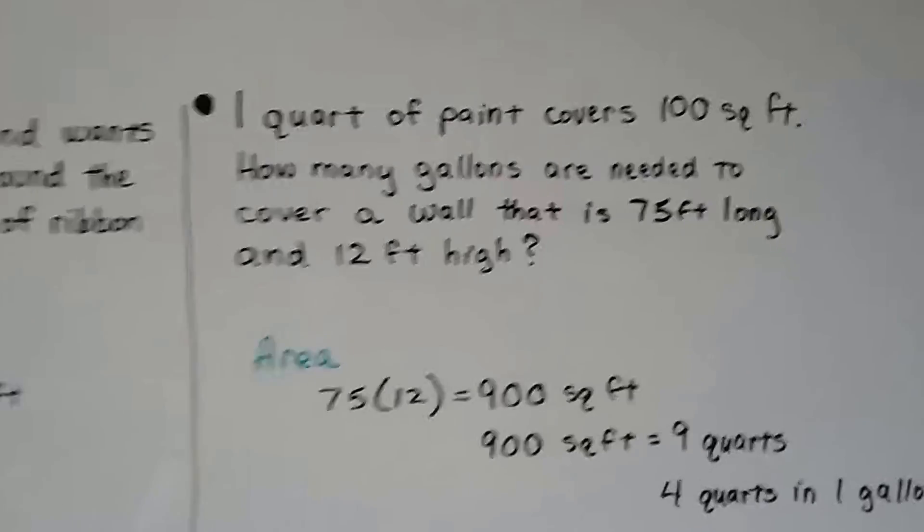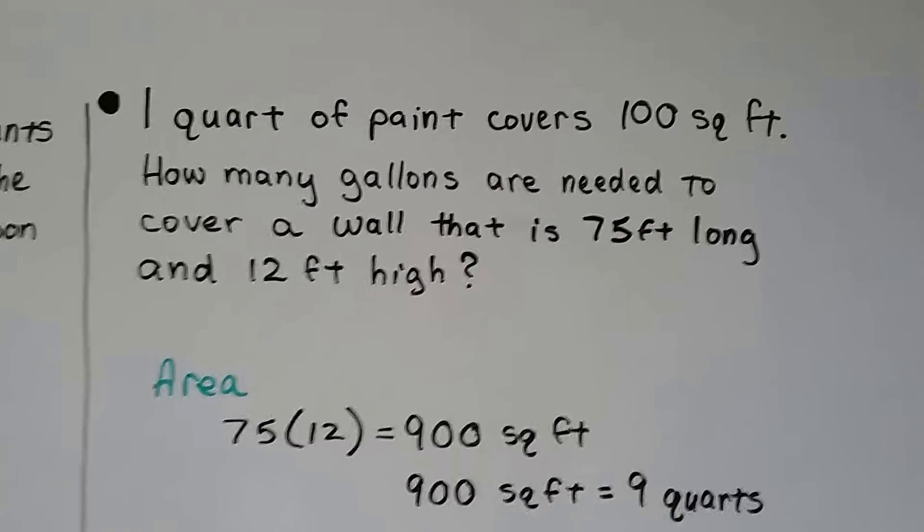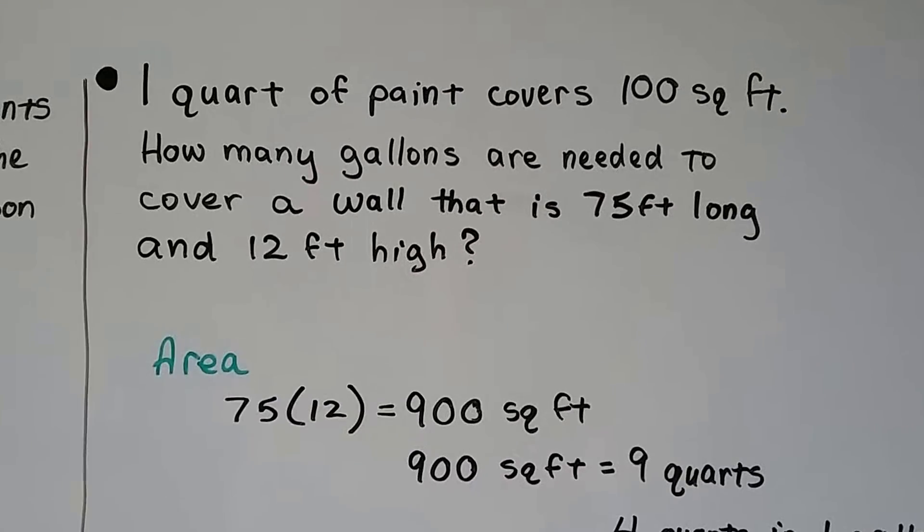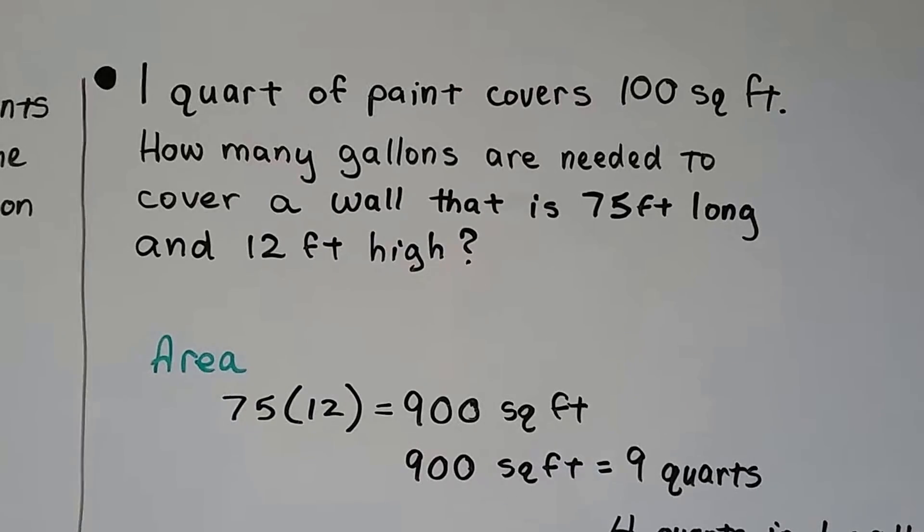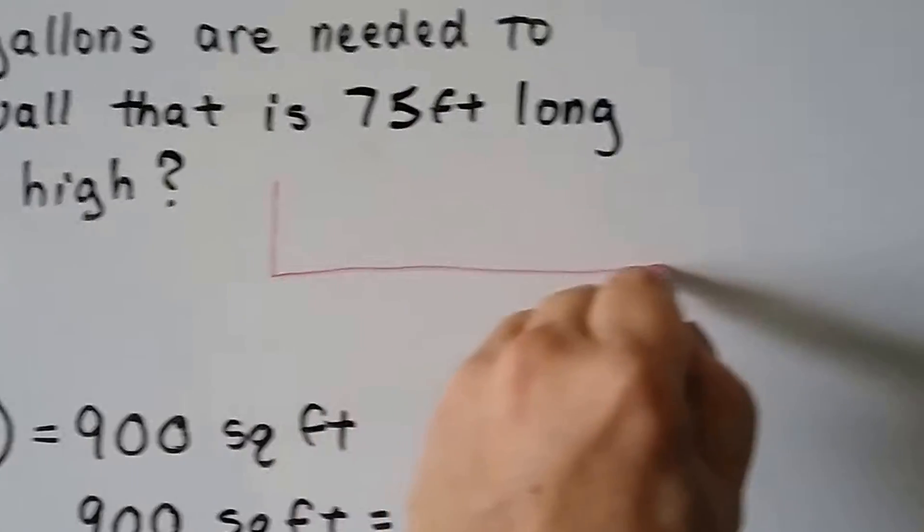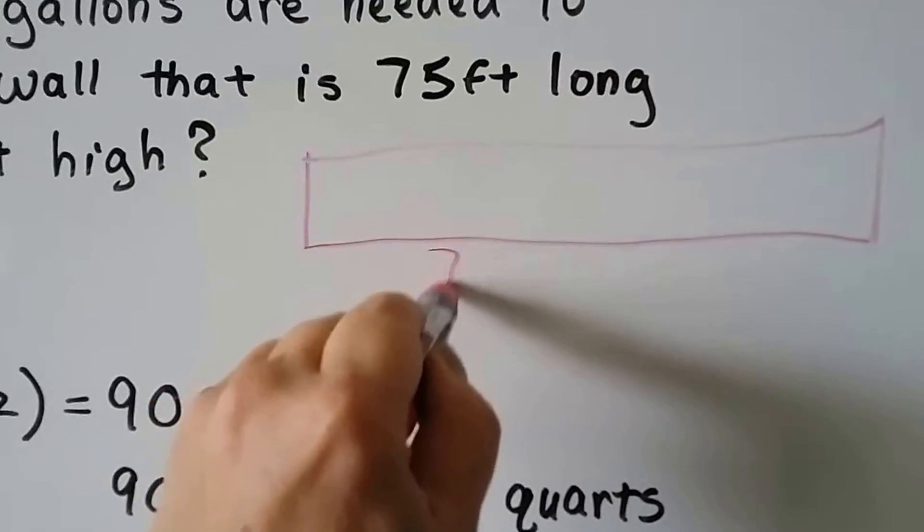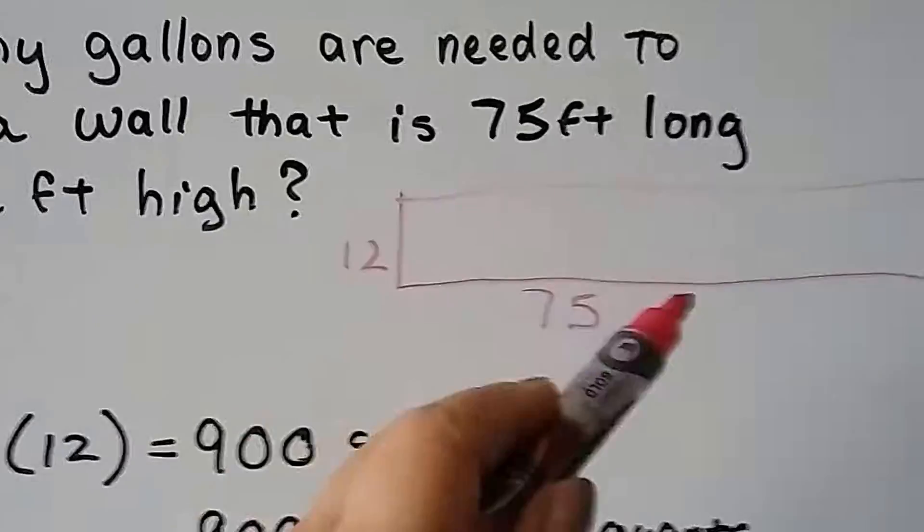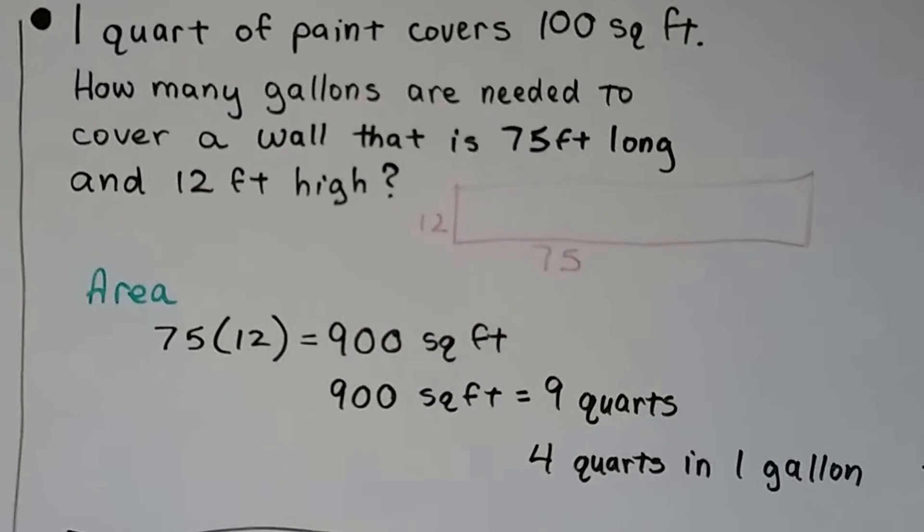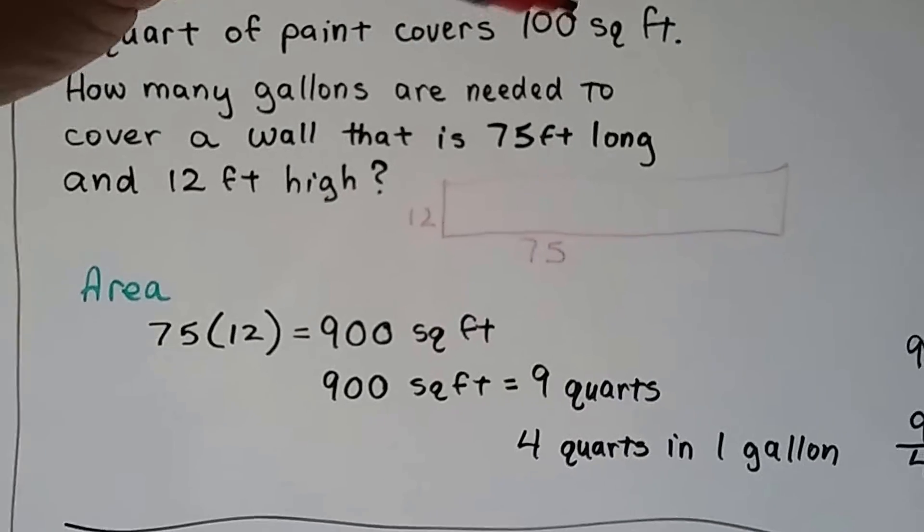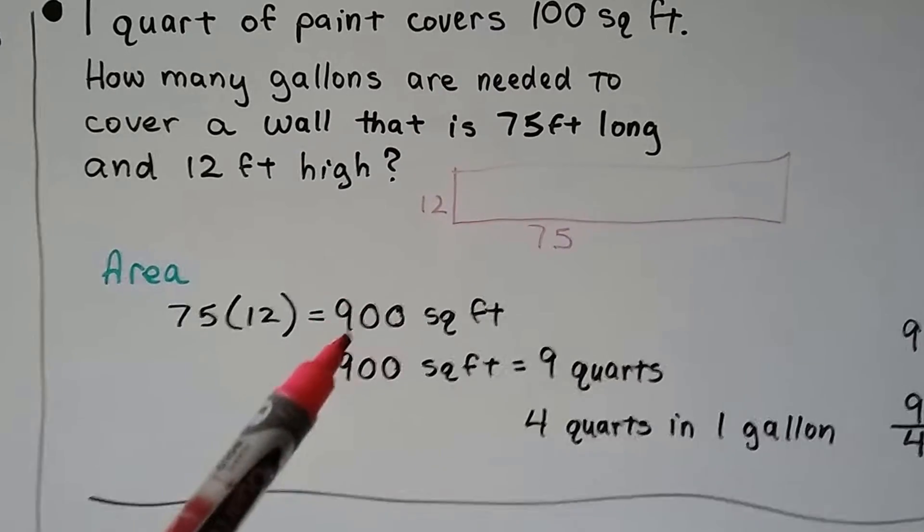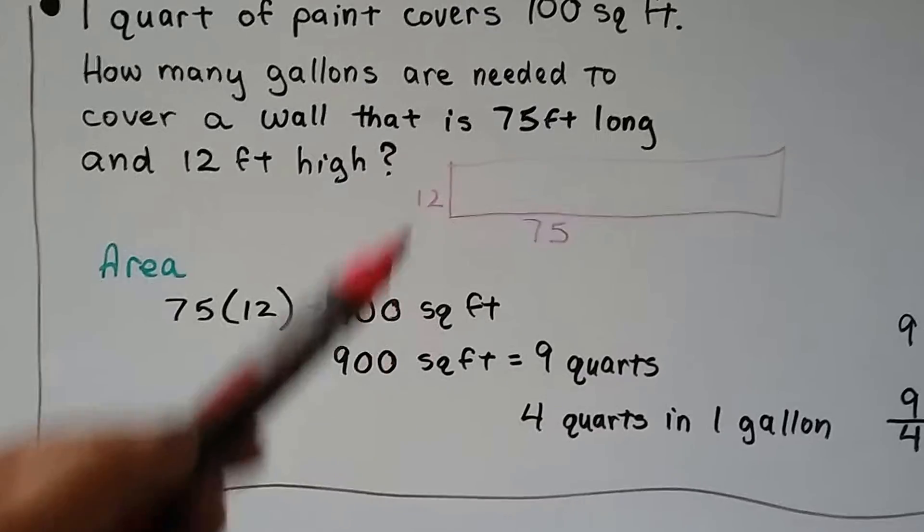We have one quart of paint covers 100 square feet. How many gallons are needed to cover a wall that is 75 feet long and 12 feet high? This is just length times width. We need to find the area. When we multiply these two together, we get 900 square feet. But one quart of paint covers 100 square feet and it's asking for gallons. We know there's 4 quarts in a gallon. We know the 900 square feet is 9 quarts because there's 100 per quart.